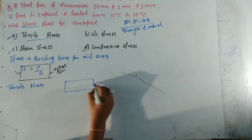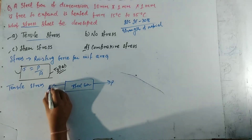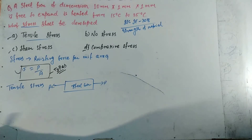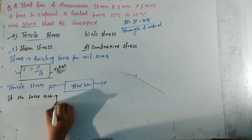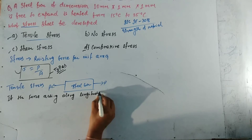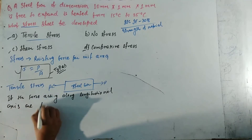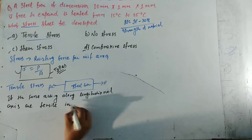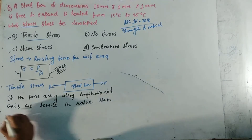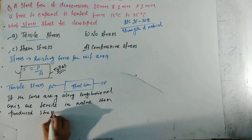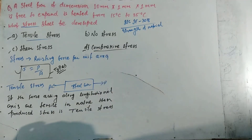First, we see option A — tensile stress. What is tensile stress? Suppose we have an object, that is a steel bar, and we apply force on both sides such that elongation takes place. When the forces acting along the longitudinal axis are tensile in nature, then the stress produced is called tensile stress.